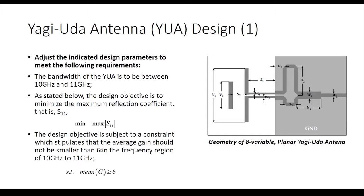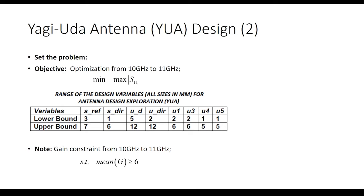The constraint is in the same range that we're looking to minimize as well. The problem is expressed here in shortened form, giving us our parameters, our objective, and this time our constraints as well. The gain constraint is something new, but everything else is the same as the dielectric resonator antenna. Let's load up the software.